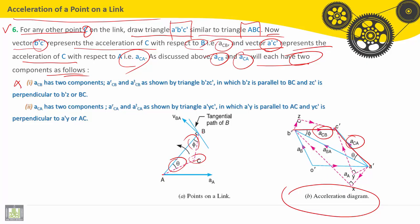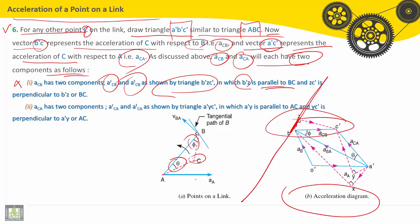ACB has two components, AR-C-B and AT-C-B, as shown by the triangle B-J-C-dash. Let's see here B-J-C-dash, in which B-J-Dash is parallel to BC and is perpendicular to B-J-Dash or BC.